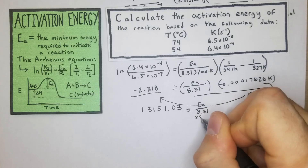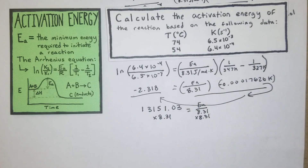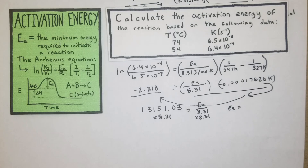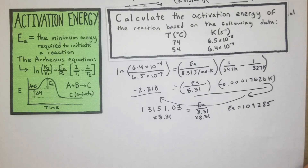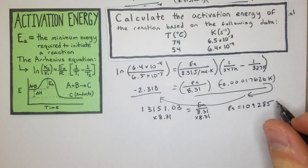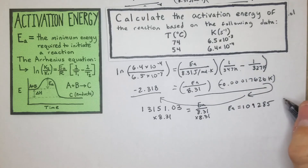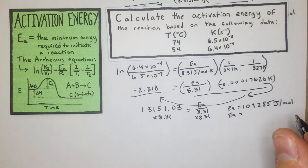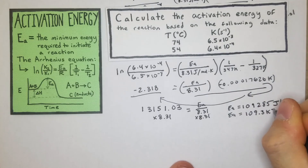We divide both sides by the negative bracket value, and we get 13151.03 equal to Ea over 8.31. Multiplying both sides by 8.31, our Ea equals 109285 joules per mole. Getting rid of Kelvin we're left with joules per mole, so our Ea equals 109.3 kilojoules per mole.